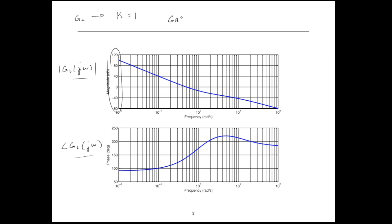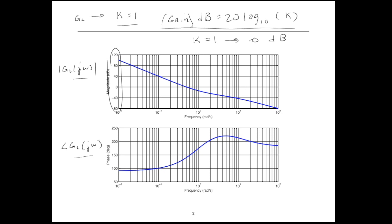Let's talk about decibels. The gain in dB is equal to 20 log base 10 of k. So for k equal to 1, log 10 of 1 is 0, which means k equals 1 implies 0 dB. That's not to say this plot is 0 dB everywhere — that's just the contribution of k equal 1. In order to effectively work with Bode plots, you have to be able to make this conversion between values of k and decibels.